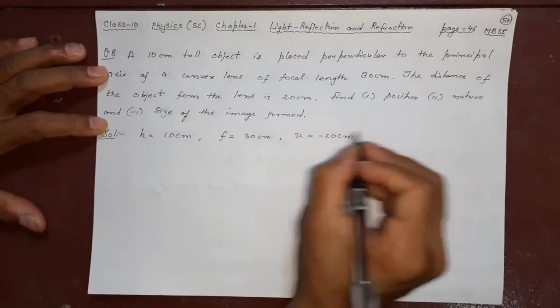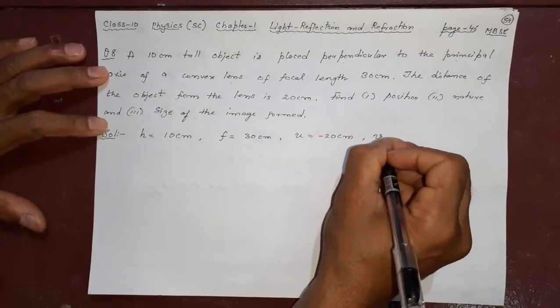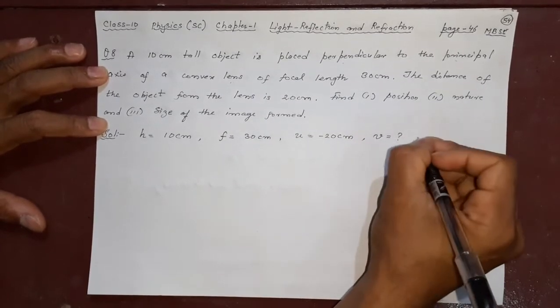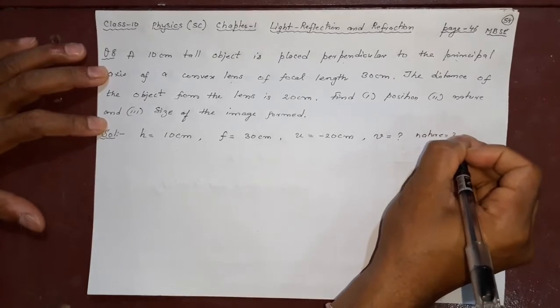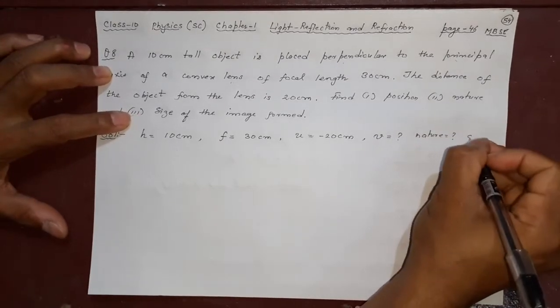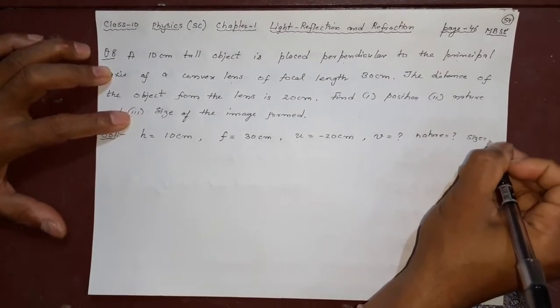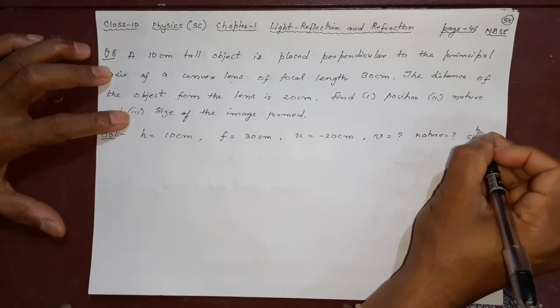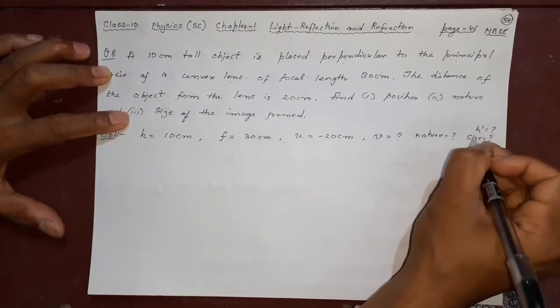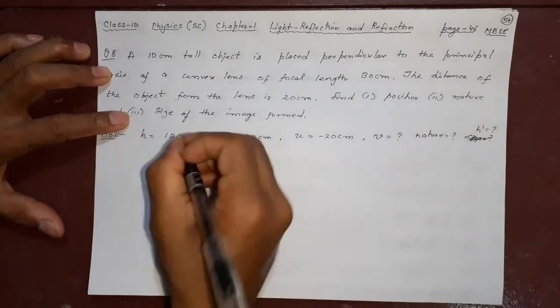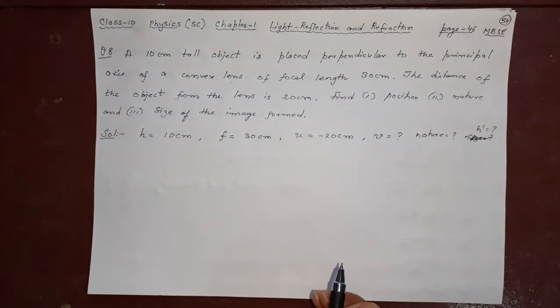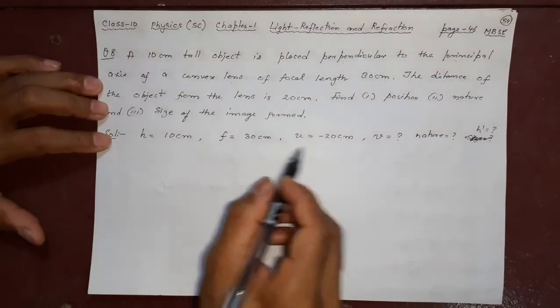Find the position of the image, what is this, v is equal to what. Nature, virtual or erect, that is the question. Size, what is the h dash. h is given, so you are fine. This is a very common question, this type of question is asked in your exams.